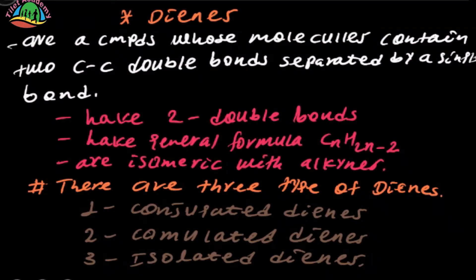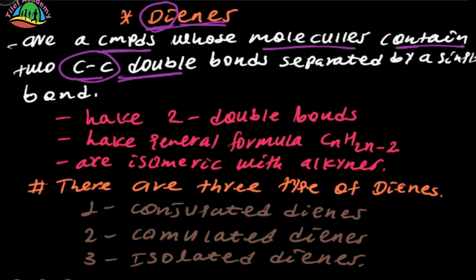Here is Dynes. Dynes are a compound whose molecules contain two carbon-carbon double bonds separated by a single bond.